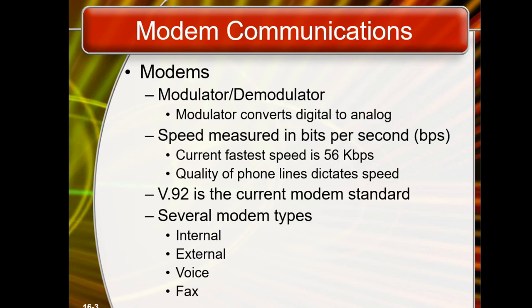A modem is a device that converts data from digital format to analog, and from analog to digital format. Speed is measured in bits per second. The current fast speed is 56 kilobits per second, now up to 112 bits per second. The quality of the phone lines dictates the speed.